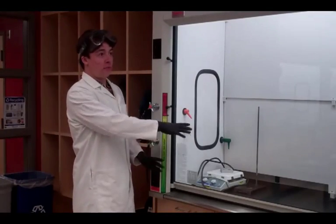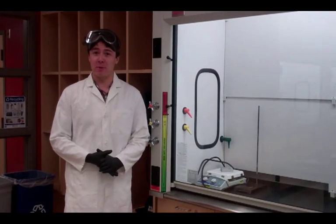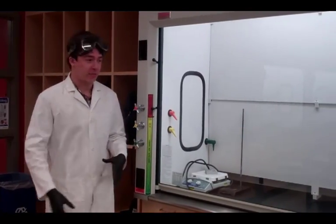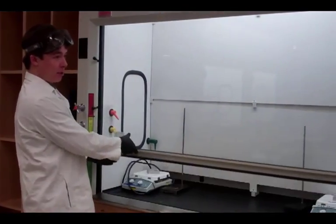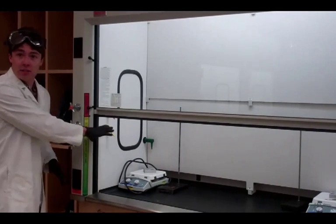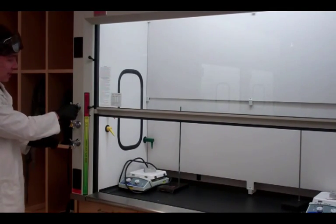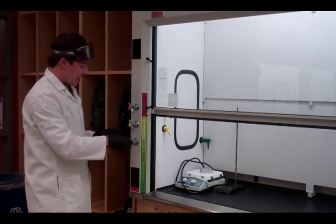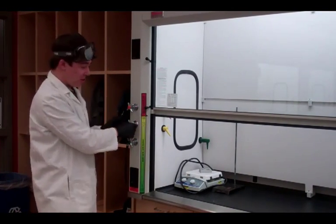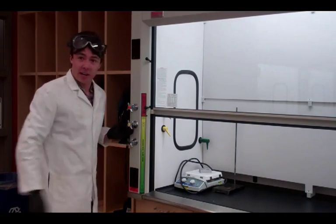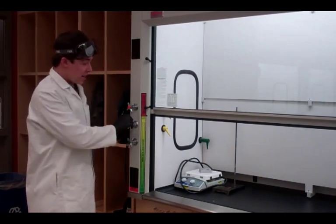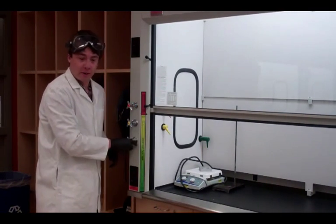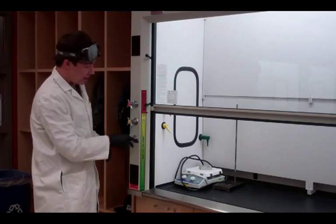So these are our fume hoods. This is for all of the toxic chemicals that we work with so we don't inhale any of the fumes and get any bad side effects from it. This lifts up here so we do our work. We have a couple different nozzles under here that we work with. This one is air. Mostly just use that to dry things out. This is going to be our vacuum, and we'll show you that in a little bit for our vacuum filtration. And then we also have a water spout down there in the back.